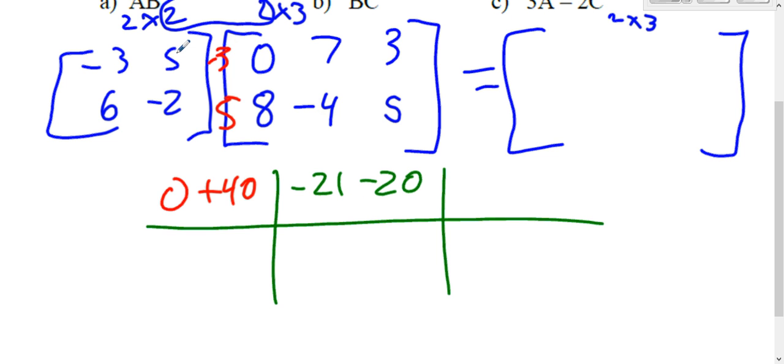And then do the same thing to the right side to get the top right. Negative 3 times 3 is negative 9. 5 times 5 is 25. So add all those up. That's our top row. 0 plus 40 is 40. That goes top left. Negative 21 and negative 20 is negative 41. That's the middle. Top middle. And then negative 9 and 25. That's 16. That's top right.